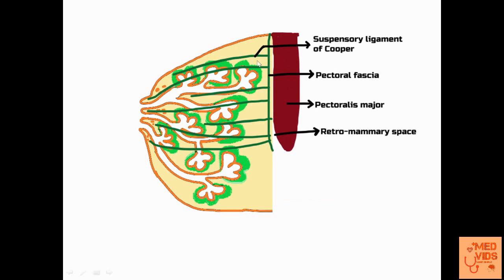This picture shows the suspensory ligaments of Cooper. You can see the pectoralis major muscle here, and just over it is the pectoral fascia. From the pectoral fascia, multiple suspensory ligaments arise which anchor to the under surface of the skin covering the breast. These are called the suspensory ligaments of Cooper. On invasion of the suspensory ligaments of Cooper, contraction occurs leading to a specific change on the skin of the breast.